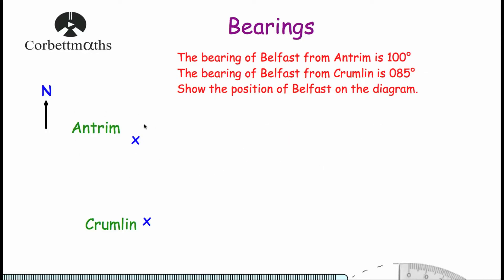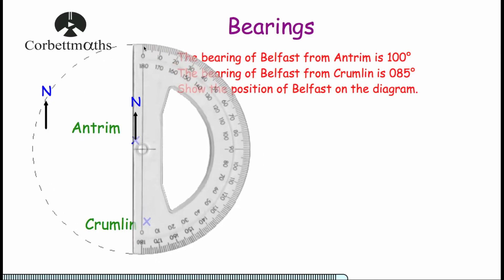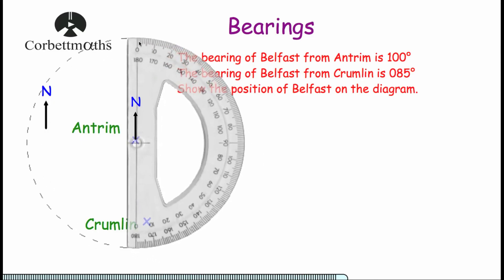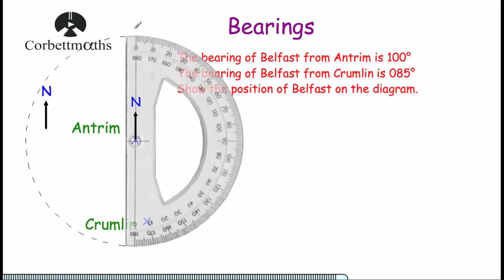So let's start with Antrim. We know the bearing of Belfast from Antrim is 100 degrees, so let's start by drawing our north line — draw it upwards and put your end there. Then let's get our protractor and we're going to find where 100 degrees is. Here's our protractor — let's line it up so we've got 0 lined up with our north line.